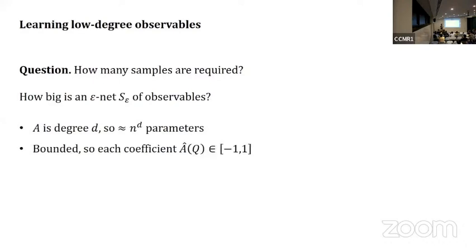So epsilon net cardinality is something like the size of this interval cut up into little pieces to the power N^D. A rule of thumb with these single outcome measurements is we optimally are cutting our space in half each time. So how many samples do we need?